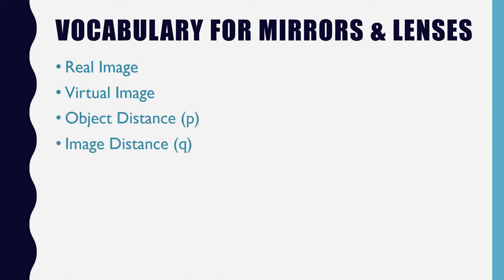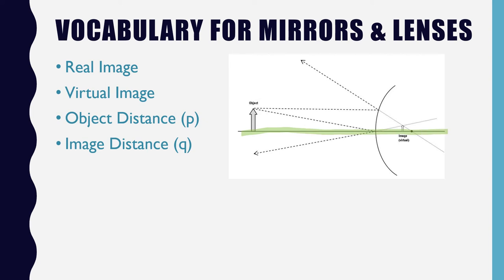The next pair of terms is the object distance and the image distance. And these are both distances measured from the mirror. So the object distance, which is represented by the letter P in an equation, is the distance from the object to the mirror. And we measure that on what we call the principal axis or a line that kind of goes through the center of that mirror. So that would be this horizontal line that you can see through here. Let me go ahead and highlight that principal axis right here. So we would measure our object distance from our object to the mirror. So that would be that distance that I've just highlighted in blue right there.